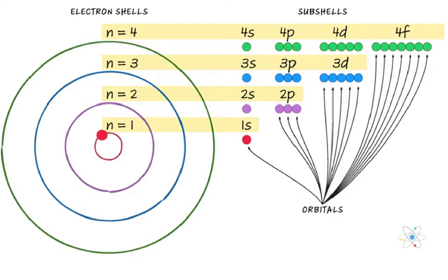In AP Physics 2, you don't have to know all the specific details about orbitals — that's more for AP Chemistry. I just need to give you the basics, because you need to understand what's happening to the orbitals. You need to know that when an electron jumps from one excited level to another, it must absorb a photon of specific energy in order to jump from one level to another. You'll learn the details in AP Chemistry, but you don't need them for AP Physics.